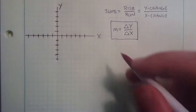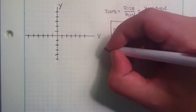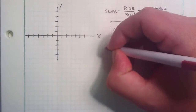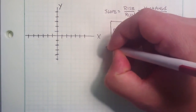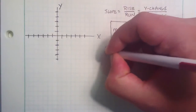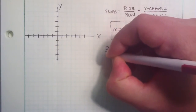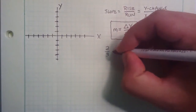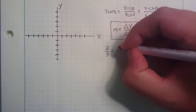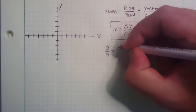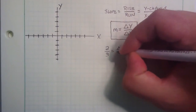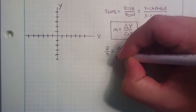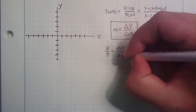So let's say that we want to plot a line with a slope of 2 thirds. So 2 is our change in y, and 3 is our change in x.